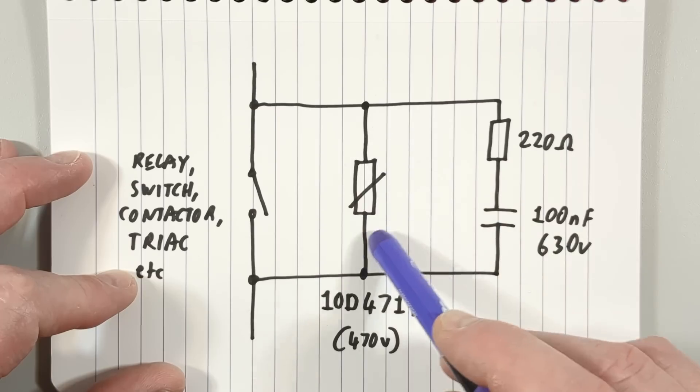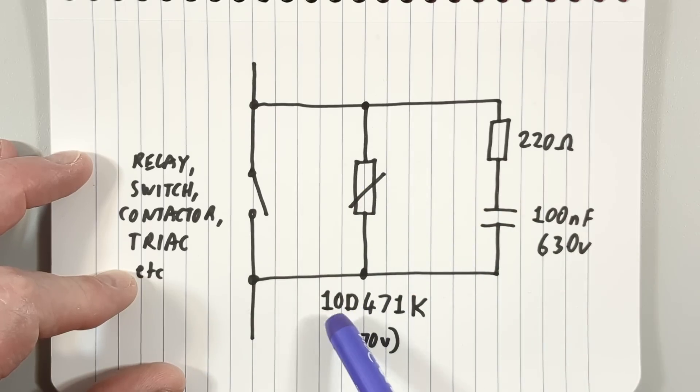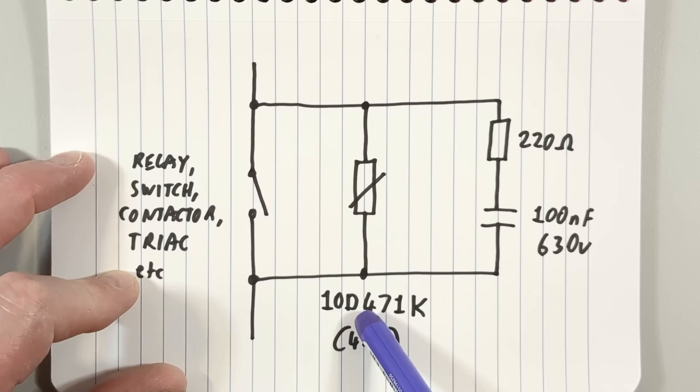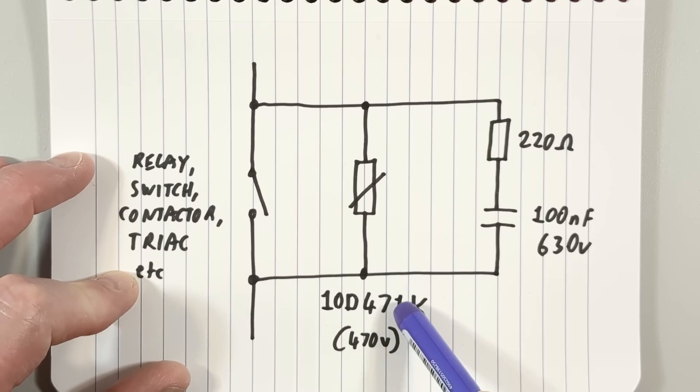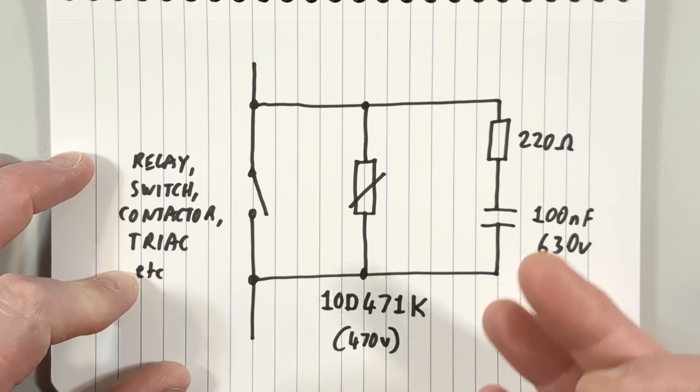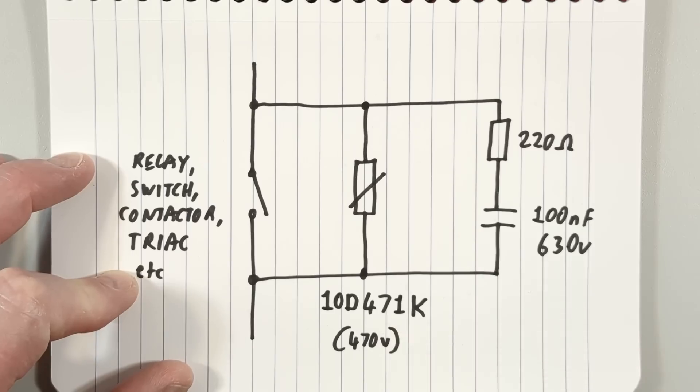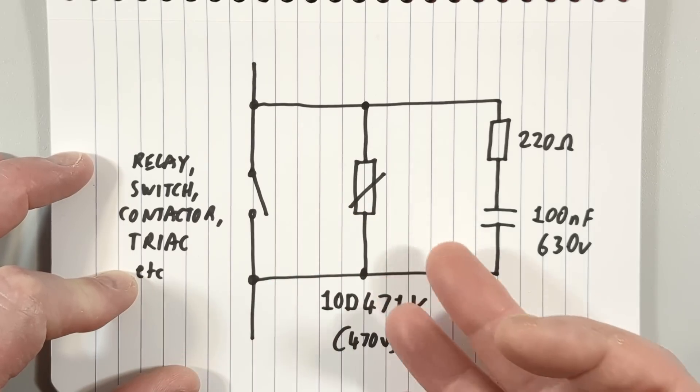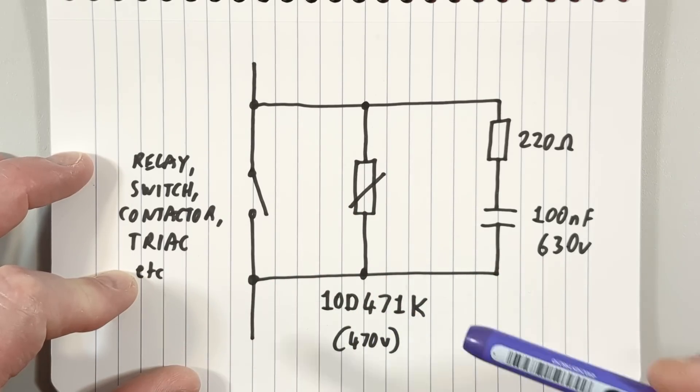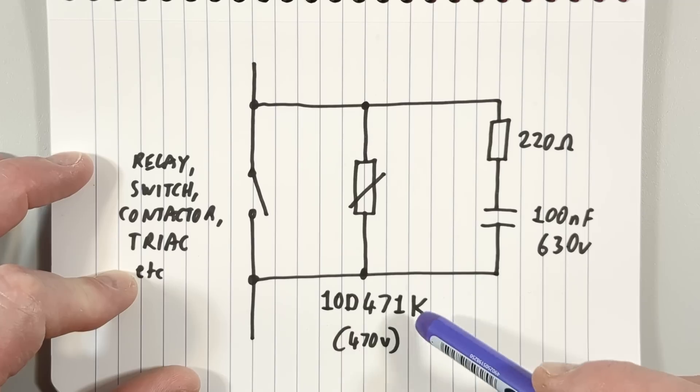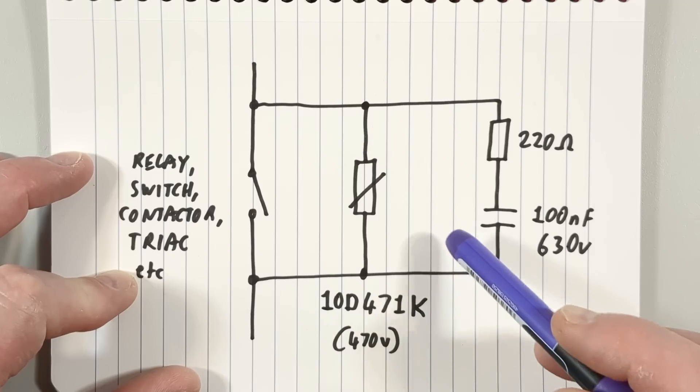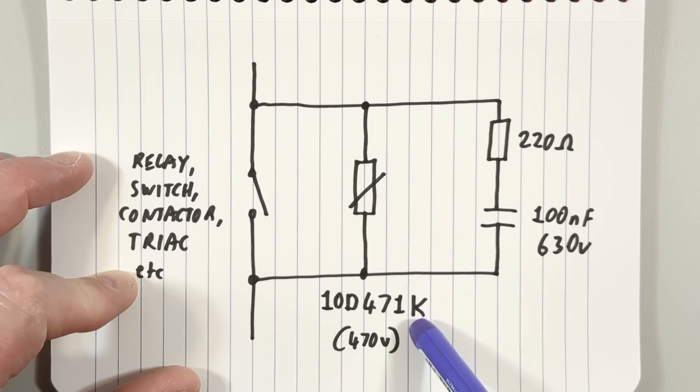In this instance we've also got a metal oxide varistor. The number is 10D471K. The 10 is the diameter, the D is disk, 471 is the voltage rating which is 47 and 1 zero, 470 volts. In the case of 120 volt supplies it would be lower, but this is typical for 220-240 volt UK, Europe, and China supplies. The K at the end stands for the tolerance.